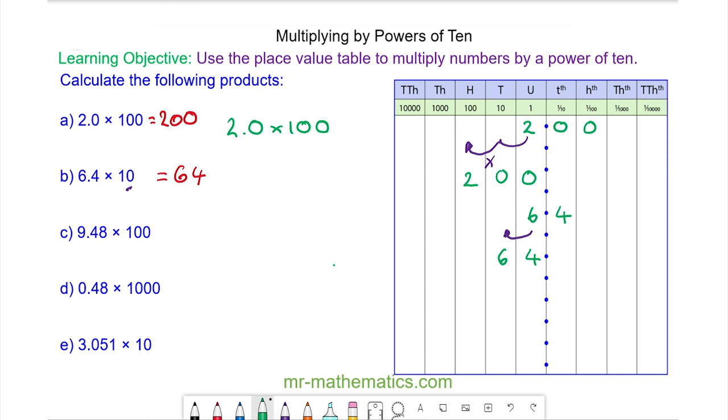For question c, we have 9 units, 4 tenths, and 8 hundredths, and we're moving every number to the left by two places because of the two zeros. So we have 948.